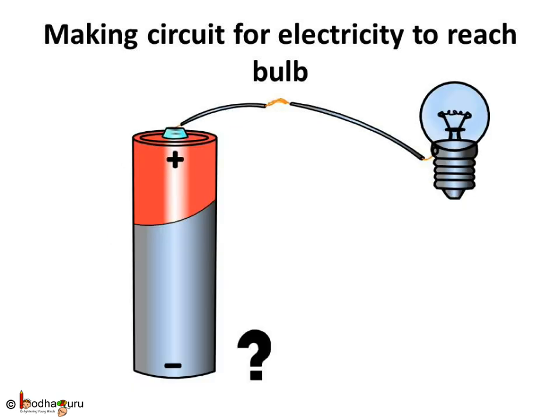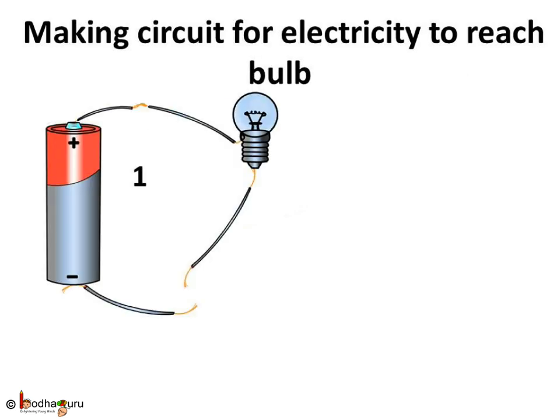We made arrangements for the current to reach the bulb, but still the bulb is not glowing. Why? Because the cell is not connected to the second terminal. Besides, current cannot come back to the cell, so the circuit is not complete. Let us make the path for current to flow back to the cell by connecting the negative terminal of the cell with the other terminal of the bulb. For this, connect a wire to the other terminal of the bulb — the tip of the metal base — and connect the other end of this wire with the negative end of the cell.